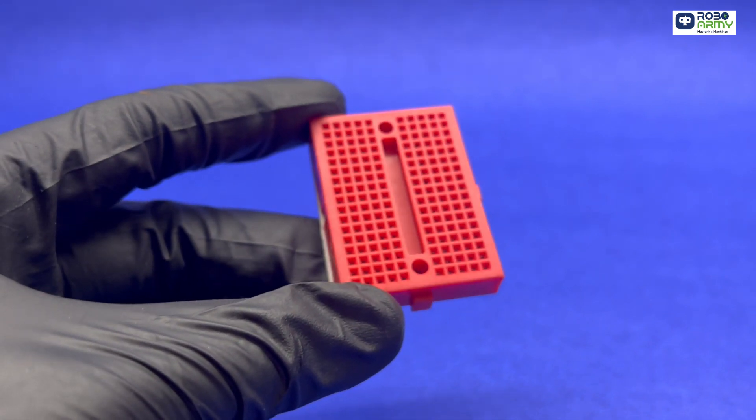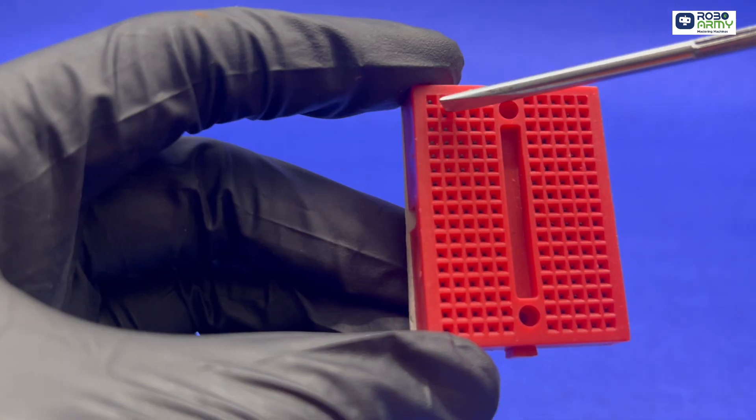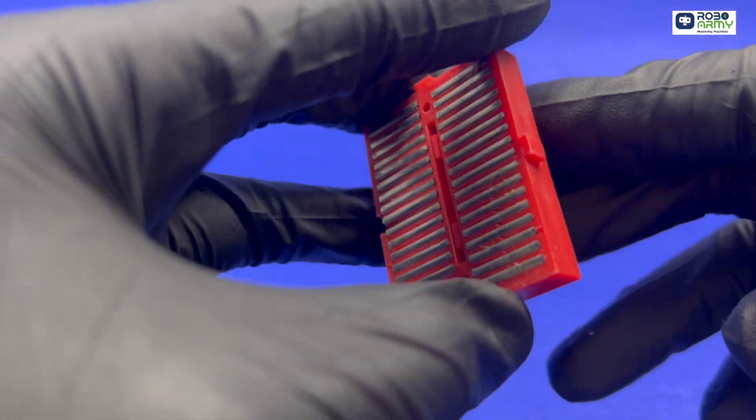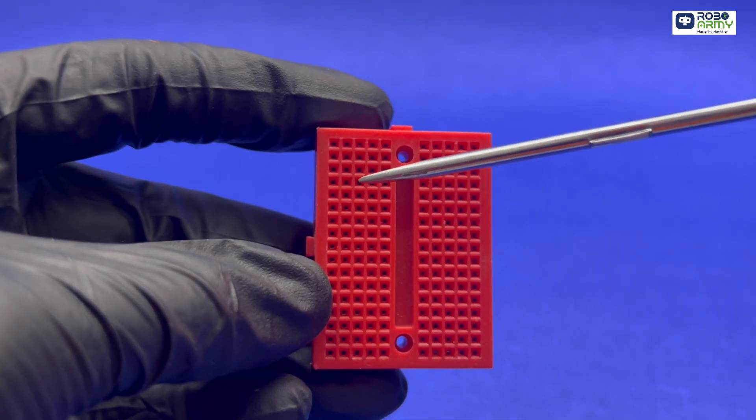First of all, let's understand the breadboard. Rows of five holes are connected internally. The gap in the middle separates connections. These adjacent rows are not connected.